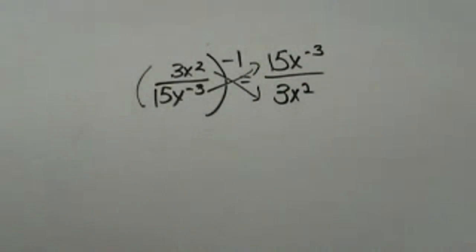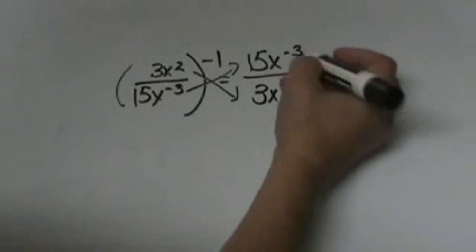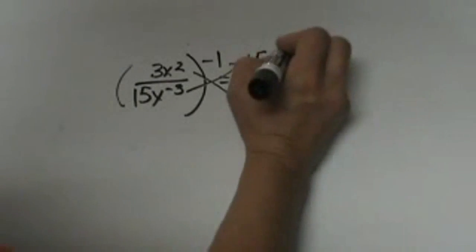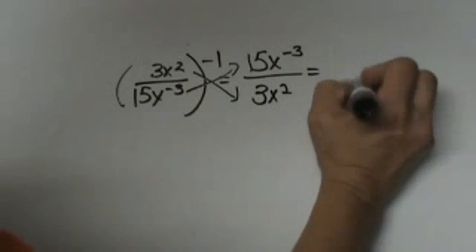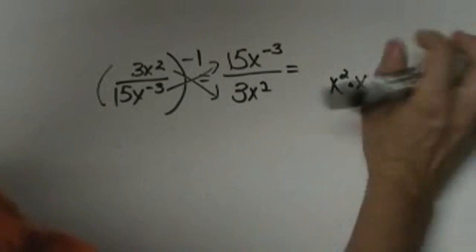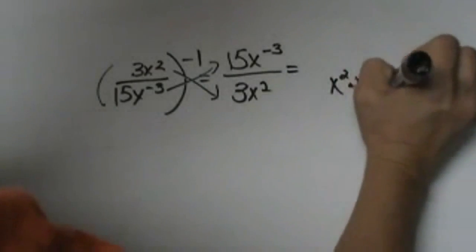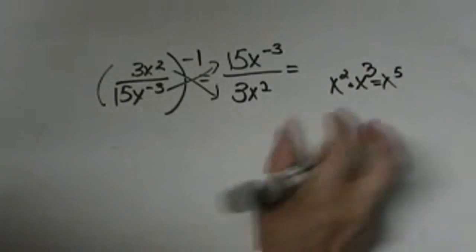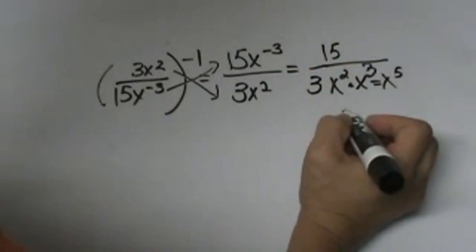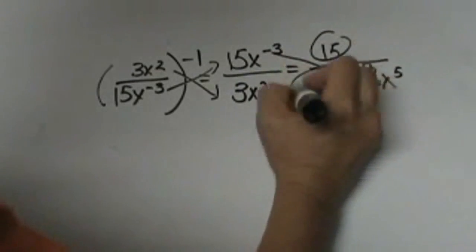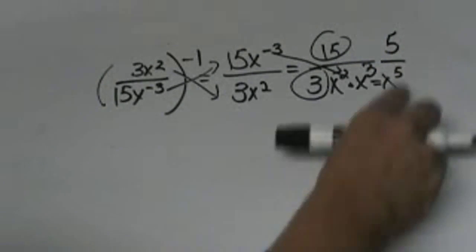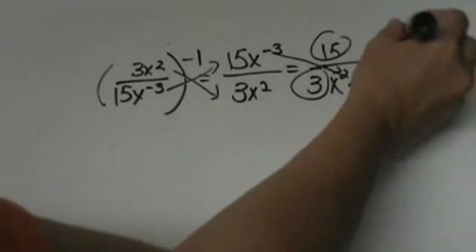From here I'm just going to simplify. I first need to take this x to the negative third and move it — since it's a negative exponent it's going to go down to the bottom and become a positive exponent. So my x's are actually going to simplify to x to the fifth, because I'm going to add those together. On top I have 15 and on the bottom I have 3, so I need to look at my integers — 15 and 3 reduce to 5. So I'm going to end up with 5 over x to the fifth as my final answer.